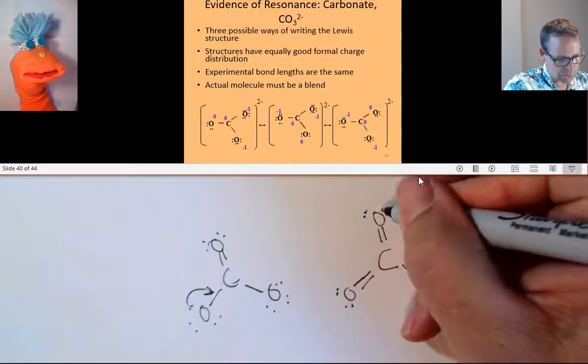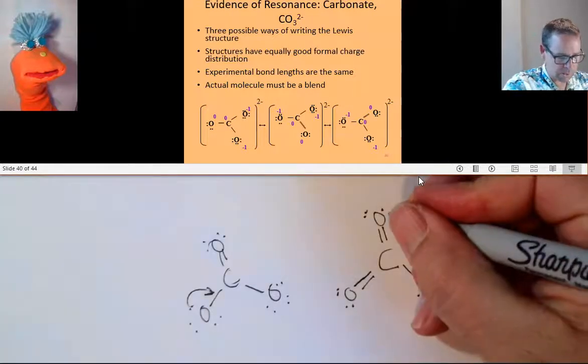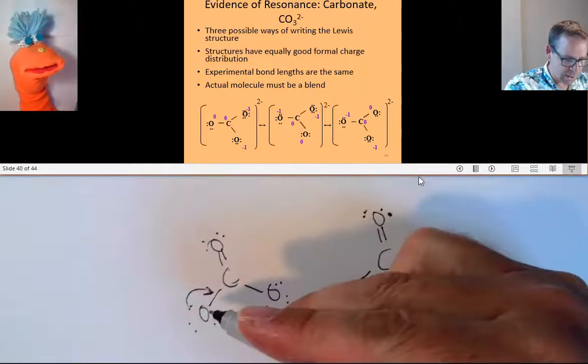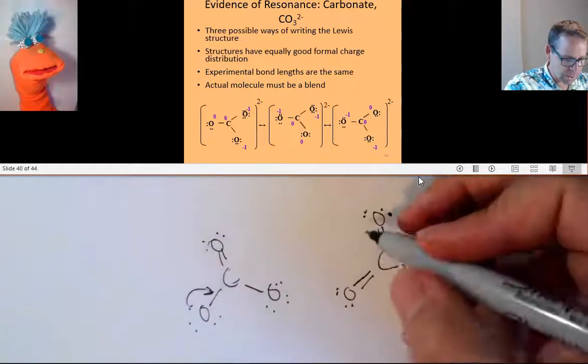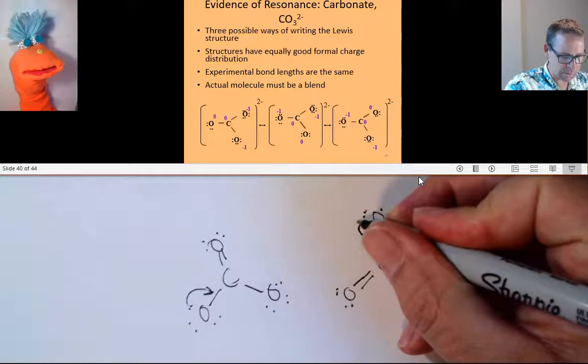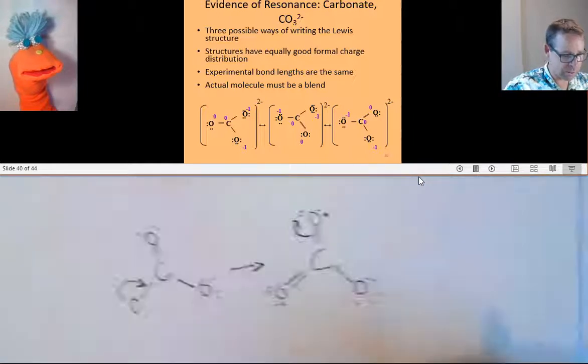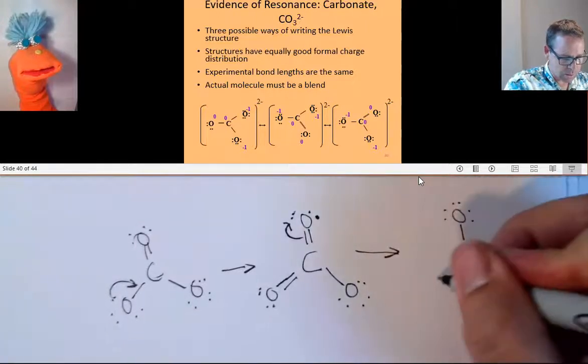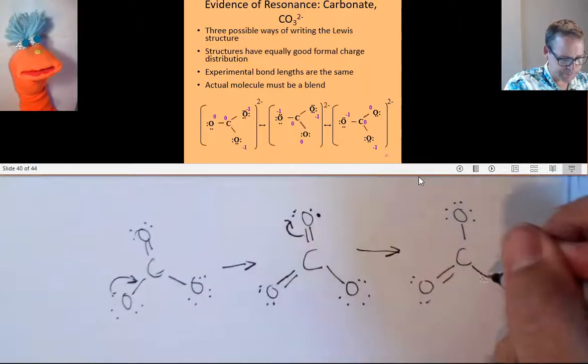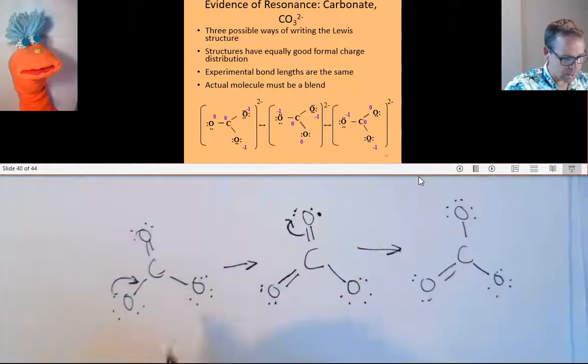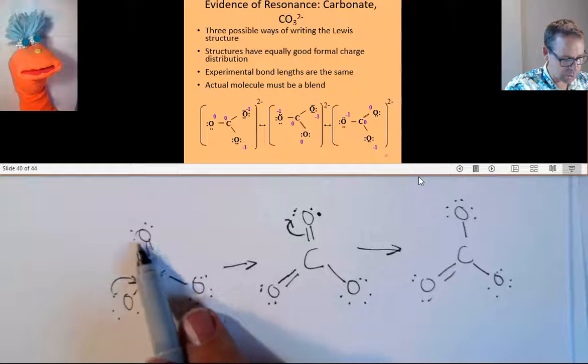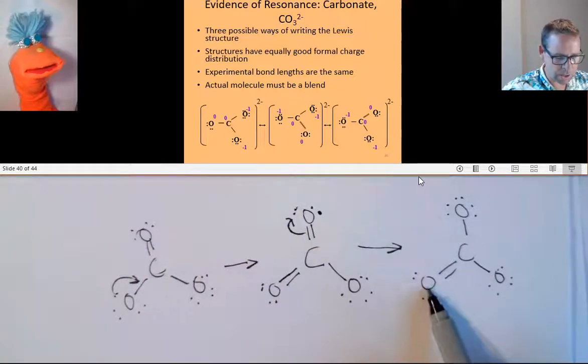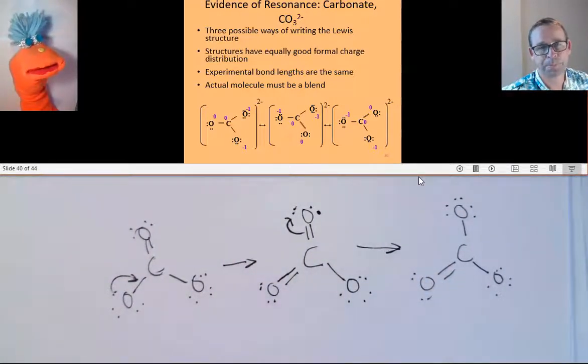Now this structure is not stable because there's too much electron density on the carbon. So what happens is as soon as this begins to move in, the electron density from one of these bonds here begins to move out. So this is kind of like a half a step, and then the next half a step is this oxygen now has the extra electron density, whereas this oxygen used to have the double bond. Now we see the oxygen having the double bond is the one down here.